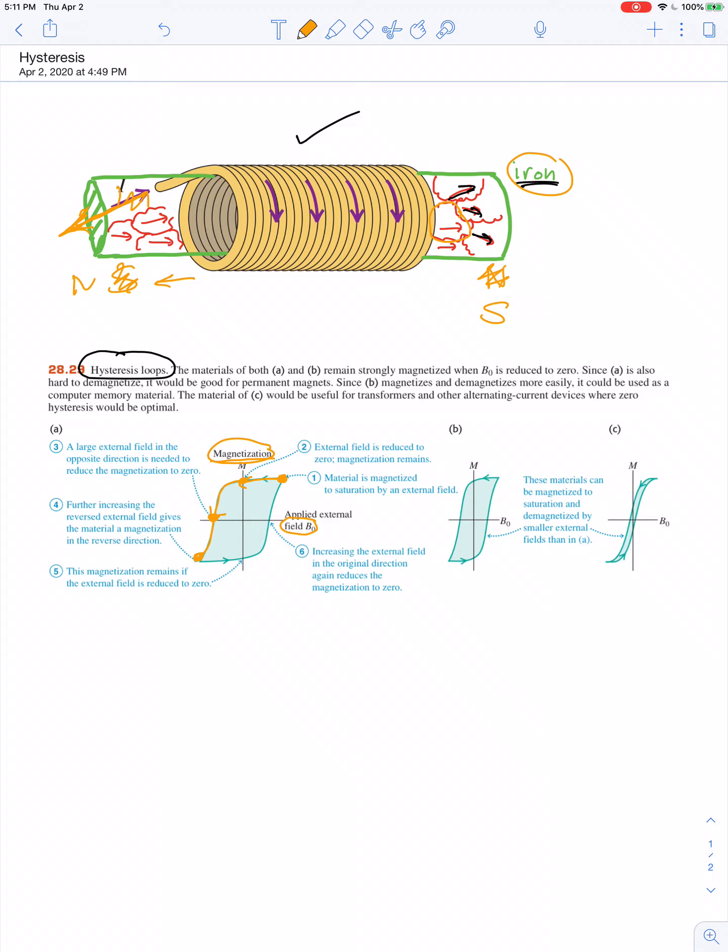If you wanted to again get rid of those magnetic poles and demagnetize it, you don't just bring the magnetic field to zero. You have to bring the current back in the original direction, and on and on we go.